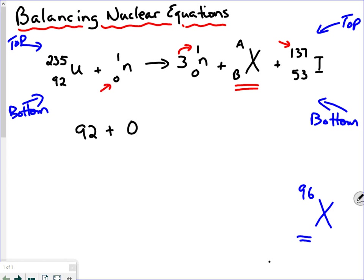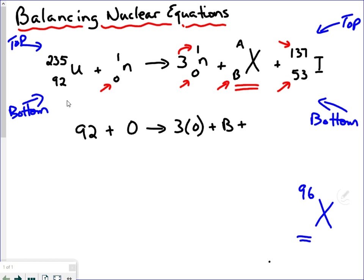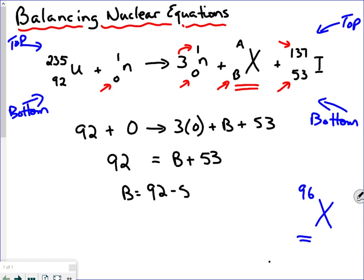And on the product side, 3 times 0 is just 0, so it's going to be 0 plus B plus 53 for iodine, whose atomic number is 53. So we add up 92 and 0 on the reactant side — that's the total atomic number of the reactant side — and it equals the total atomic number of the product side, which is B plus 53. Subtracting 53 from both sides, we get B equals 92 minus 53, which means B equals 39.